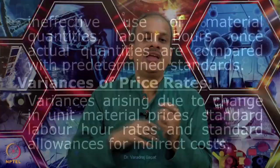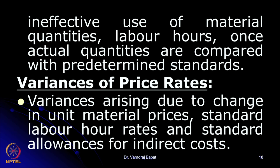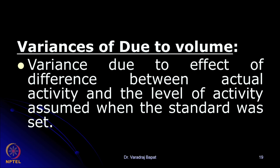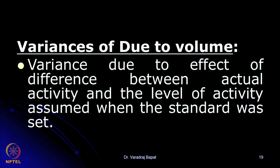There are also variances because of price factors. If material prices increase or decrease, it leads to price variances. Similarly, if wage rates or labor rates change, it leads to price variances. If indirect costs increase — like electricity bills or petrol costs — they are also called price variances. So the two major causes are efficiency and price. But there is one more important cause: volume, meaning a change in the level of activity. Because we have made a budget at a particular level of activity, if the level of activity changes, that also leads to changes in costs — those changes are called volume variances.